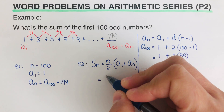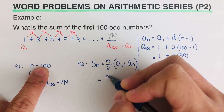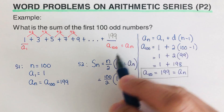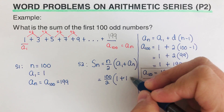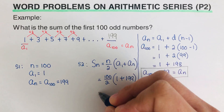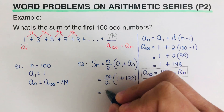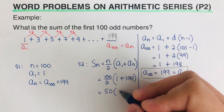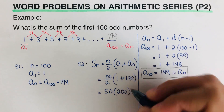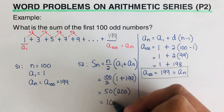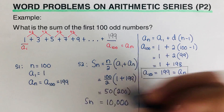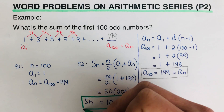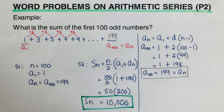Plugging in our values: S = 100/2 × (1 + 199) = 50 × 200 = 10,000. So the sum of the first 100 odd numbers is 10,000.